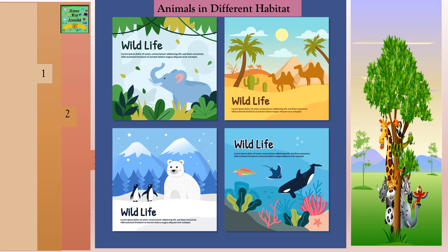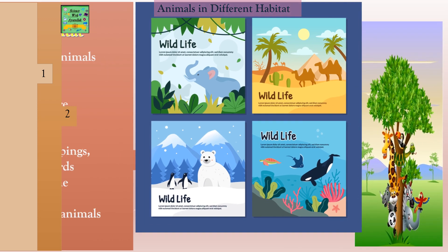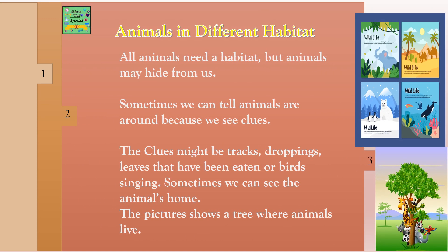Animals in Different Habitats. All animals need a habitat, but animals may hide from us. Sometimes we can tell animals are around because we see clues. The clues might be tracks, droppings, leaves that have been eaten, or birds singing. Sometimes we can see the animals' house. The pictures show a tree where animals live.